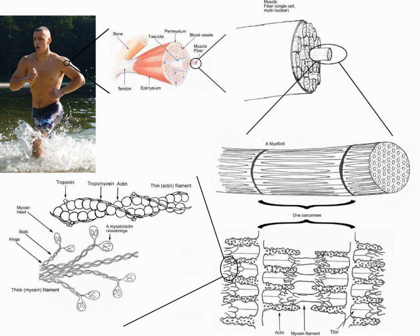For example, one manufacturer of rowing equipment calibrates its rowing ergometer to count burned calories as equal to four times the actual mechanical work, plus 300 kcal per hour. This amounts to about 20% efficiency at 250 watts of mechanical output. The mechanical energy output of a cyclic contraction can depend upon many factors, including activation timing, muscle strain trajectory, and rates of force rise and decay. These can be synthesized experimentally using work-loop analysis.